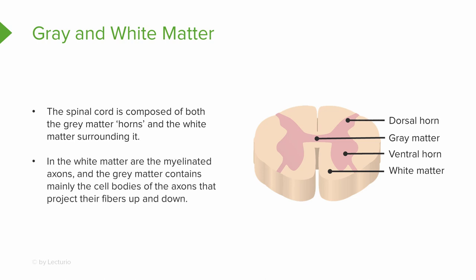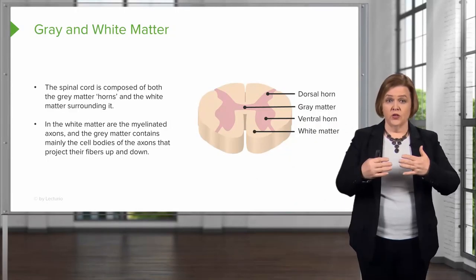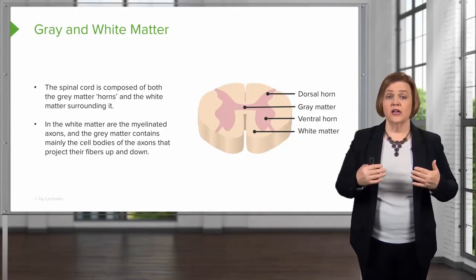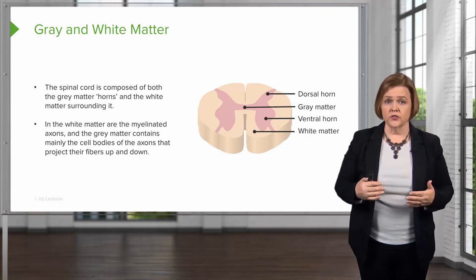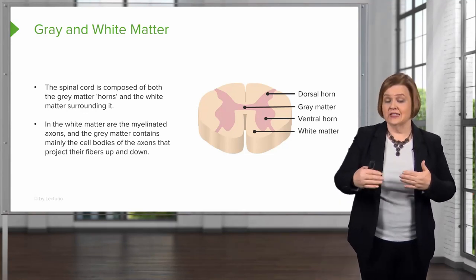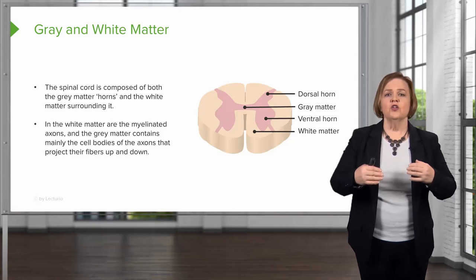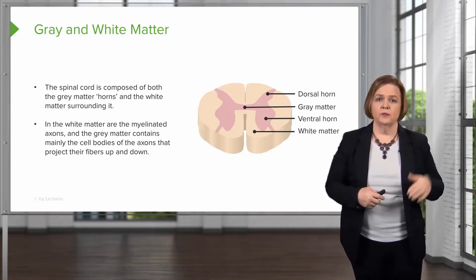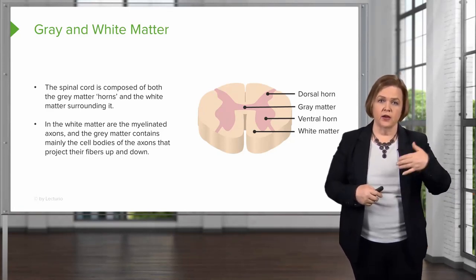In the white matter are myelinated axons, and the gray matter has mainly the cell bodies of the axons. So why is one called white matter and one called gray matter? Well, they are different colors. The white matter is the myelinated axons — that's the longer part. The gray matter is the cell bodies of the axon that project the fibers up and down.